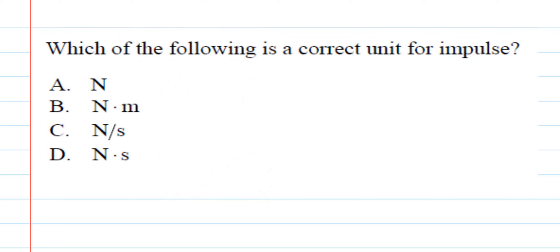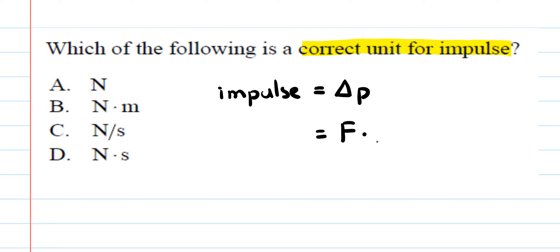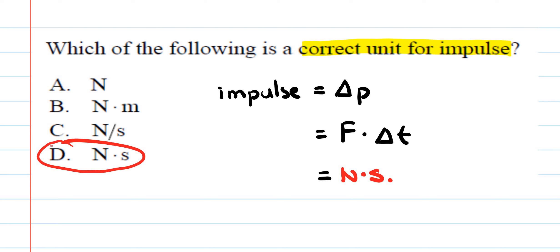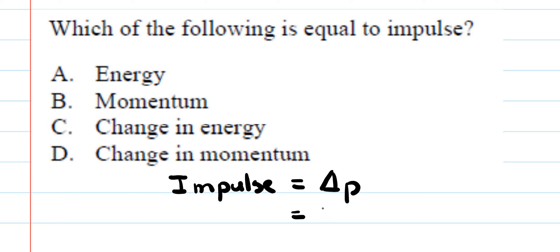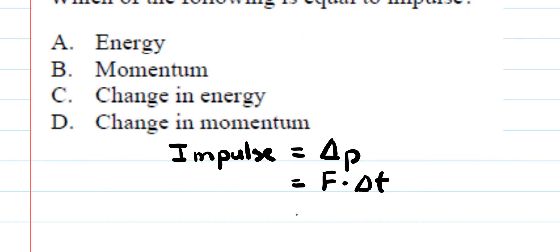For the units of impulse: impulse equals a change in momentum, which also equals force times a change in time. Force is measured in newtons and time in seconds, so the units for impulse are newton-seconds — option D. Impulse is also equal to mass times final velocity minus mass times initial velocity, but fundamentally impulse is a change in momentum.